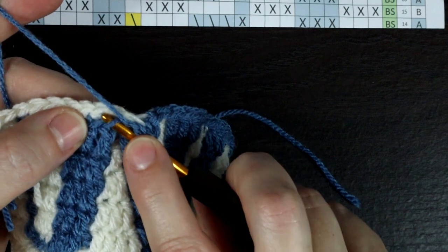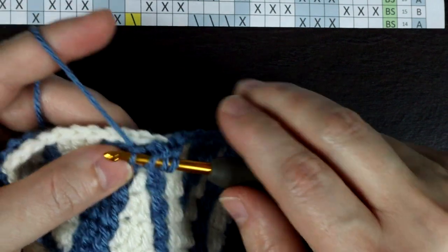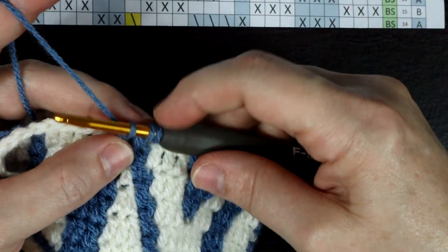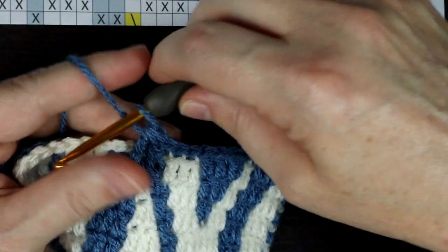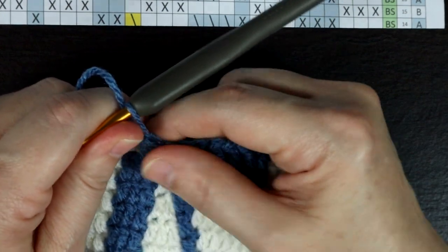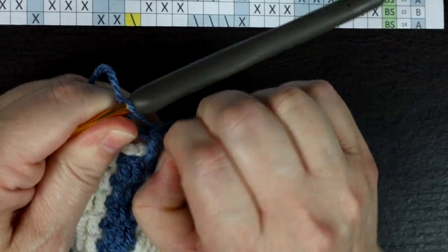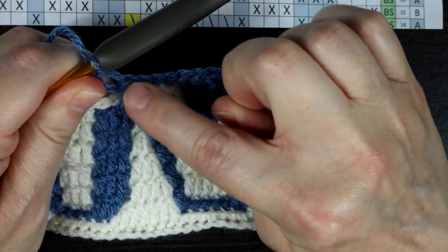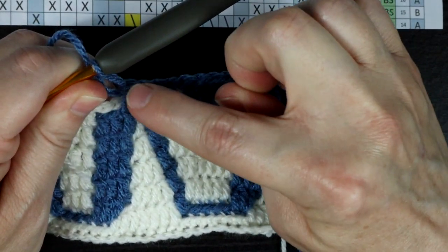Yarn over and insert your hook into the second stitch. Yarn over and pull through. Yarn over pull through two. Yarn over and pull through all three stitches. This completes the stitch. Give a slight tug into place and you have the double crochet two together angled stitch one to the right.